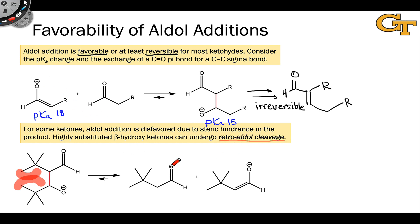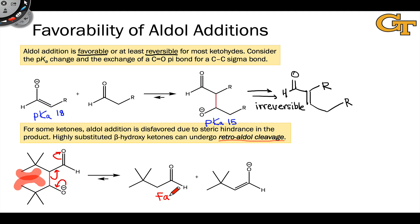Retro-aldol cleavage is the reverse of aldol addition — it's an elimination process. The key step is beta elimination, which reestablishes a carbon-oxygen pi bond and regenerates an enolate. This is retro-aldol under basic conditions; under acidic conditions we would end up with an enol, but the idea is conceptually similar. The process is favored in the forward (retro) direction because steric hindrance in the reactant is relieved by separating the molecules in space.